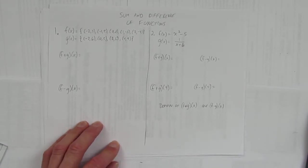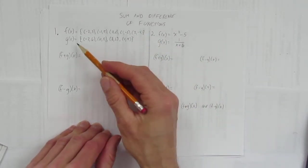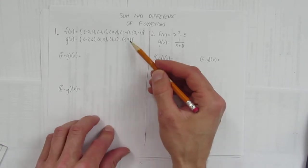f(x) is negative 2, 3; negative 1, 5; 0, 8; 1, negative 3; and 2, negative 4. Five points there. And g(x) is negative 2, 6; 0, 5; 2, 6; and 4, 9.